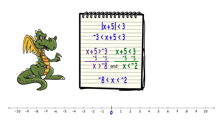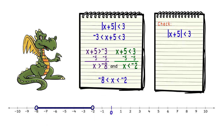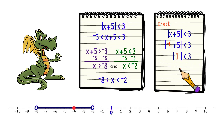Let's quickly graph all possible solutions. Now let's pick a value from the graph to verify. We can try negative 4: negative 4 plus 5 is 1, so the absolute value is 1, and 1 is less than 3. That checks out.